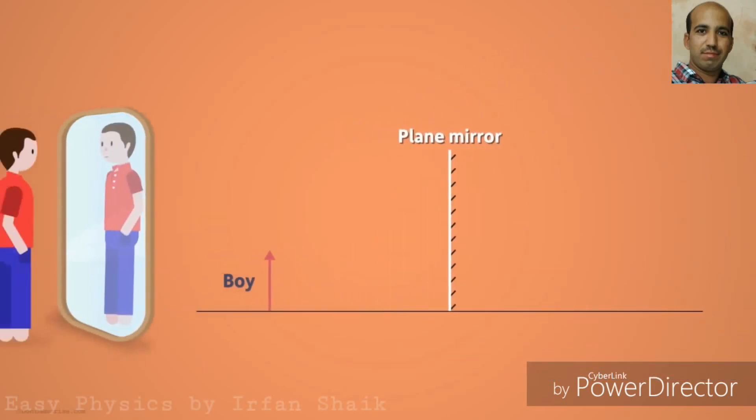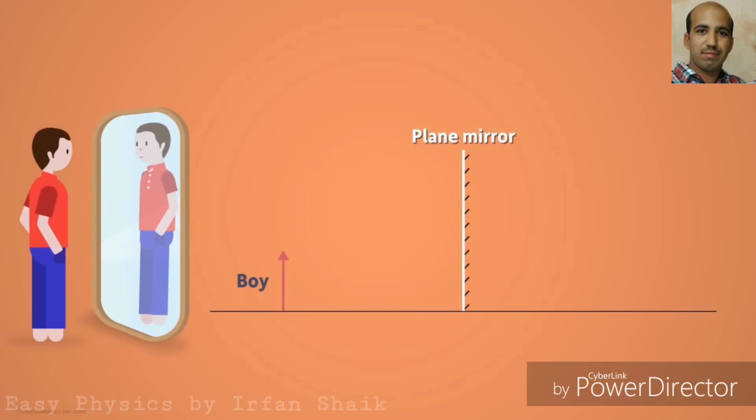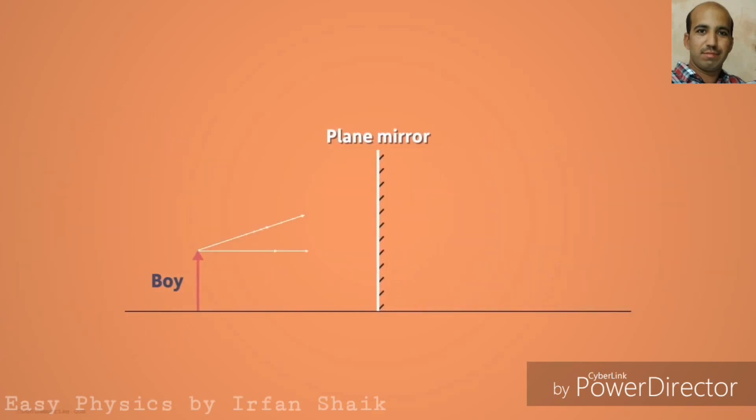When we see in the mirror, it seems to be formed behind the mirror. Let us consider two light rays coming from the top of the arrow. The rays are incident on the mirror and get reflected back.